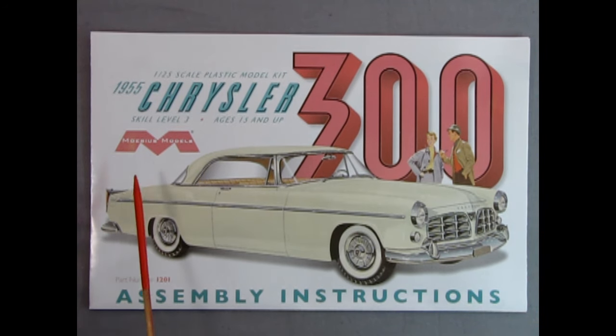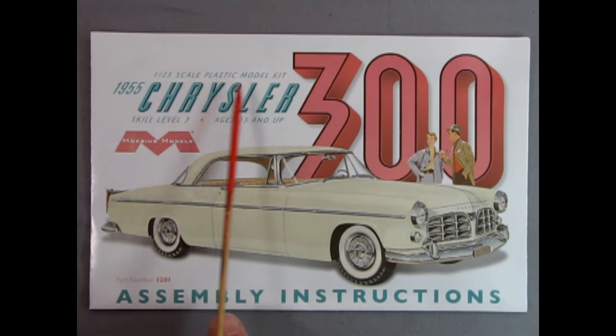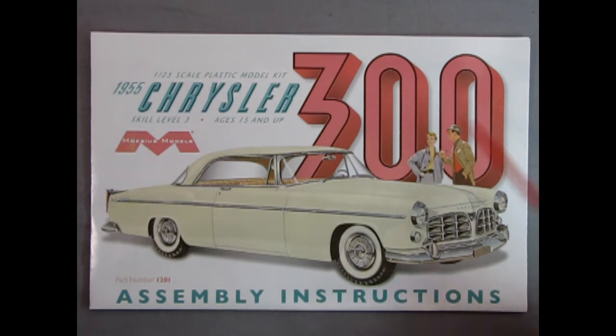Here we have the Mobius Models trademark instruction sheet. Full color. And you've got to love that, because it really helps when you're building these things. 125th scale plastic model kit. Skill level 3. So this is for advanced ages, ages 15 and up, with some experience. Part number 1201. These are the assembly instructions, taken right out of that sales brochure.